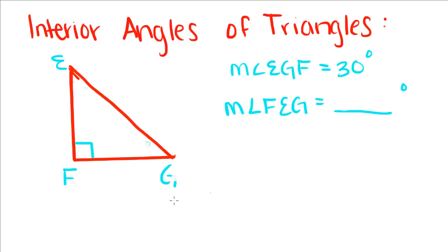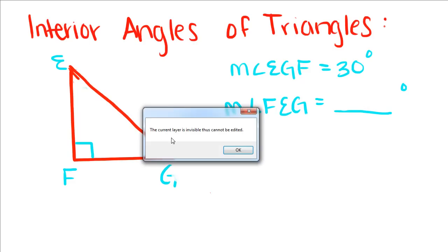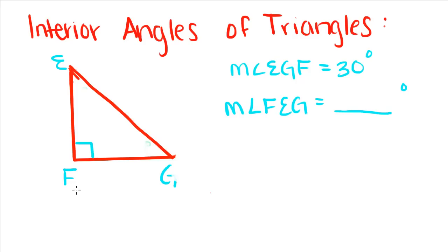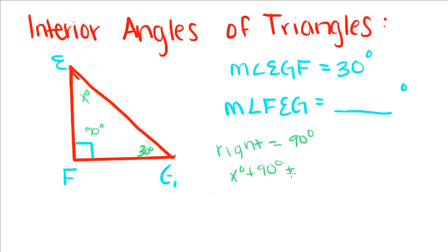Now we're going to do another example. We know that the measure of angle EGF is 30 degrees, and we want to find out what the measure of this angle is. If you remember, when we put this little square sign here, that means that this is a right angle, and a right angle is equal to 90 degrees. So we're going to add x plus 90 plus 30 and set it equal to 180 degrees.